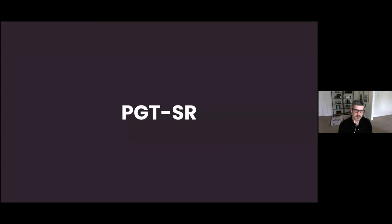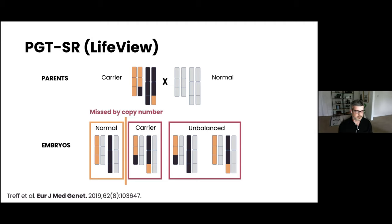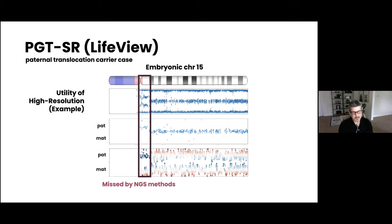We've also made improvements in other areas of PGT—PGT-SR. For example, most laboratories are only able to provide two categories, where they designate embryos as either unbalanced or as normal or carrier. With the LifeView platform, we can actually distinguish between the two. So patients would have an opportunity to identify embryos that don't carry the same balanced translocation that they do. This type of information is missed by next-generation sequencing. So we're often getting cases where patients are interested in having this opportunity where other laboratories can't provide it. I've mentioned the resolution a few times, and this is an example of a case where the breakpoint is very near the centromere and it results in a very small imbalance, which is undetectable by next-generation sequencing methods. These are the kinds of cases that we're able to accommodate that other laboratories can't.